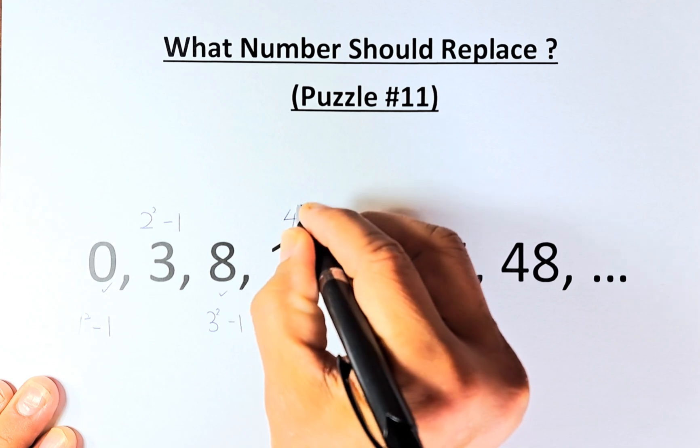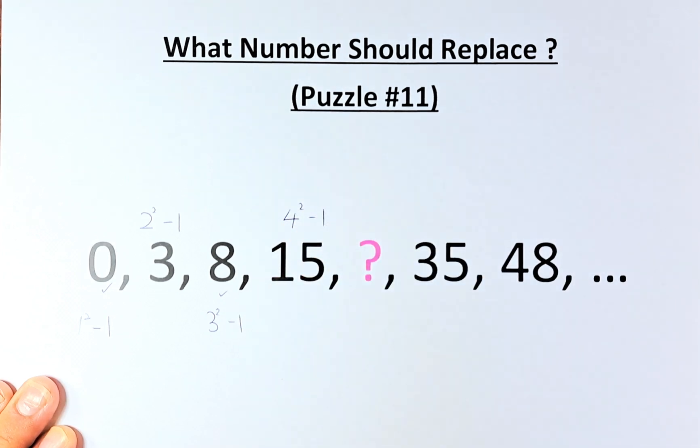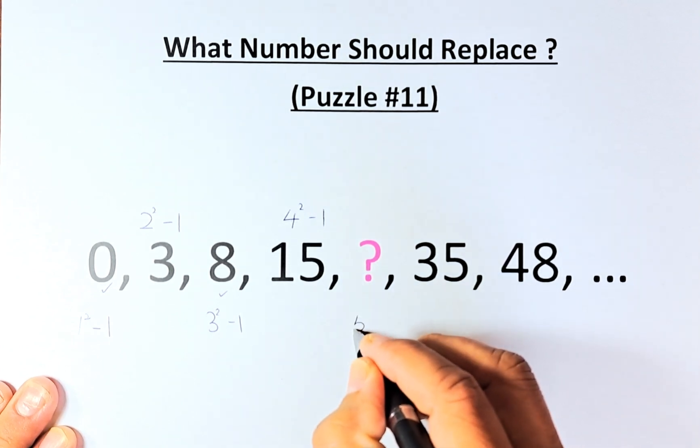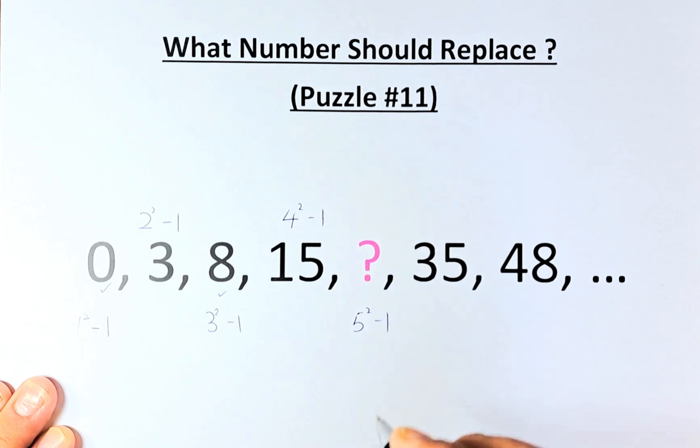15 is 4 squared minus 1. 16 minus 1 gives us 15. So you know the drill now. The question mark is going to be 5 squared minus 1. But before we do that, we're going to go to 35.